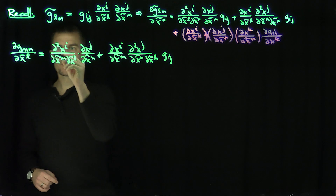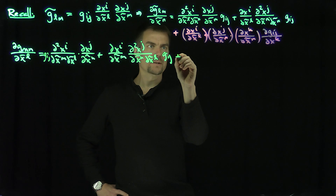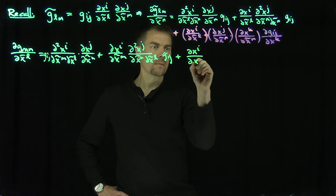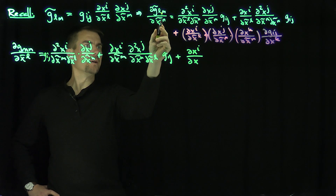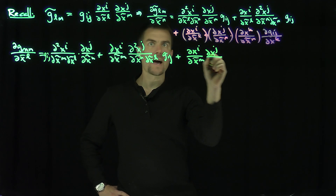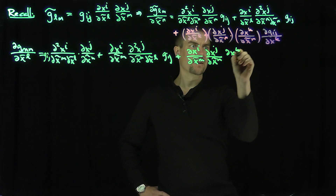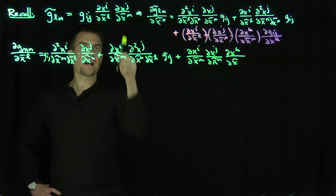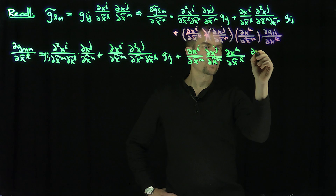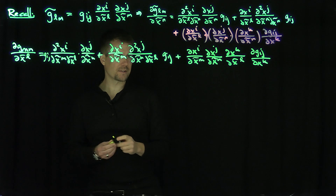These terms are also times G_IJ. And then plus DX^I/DX̃^M times DX^J/DX̃^N times DX^K/DX̃^L times ∂G_IJ/∂X^K. That's one cycle of these things.